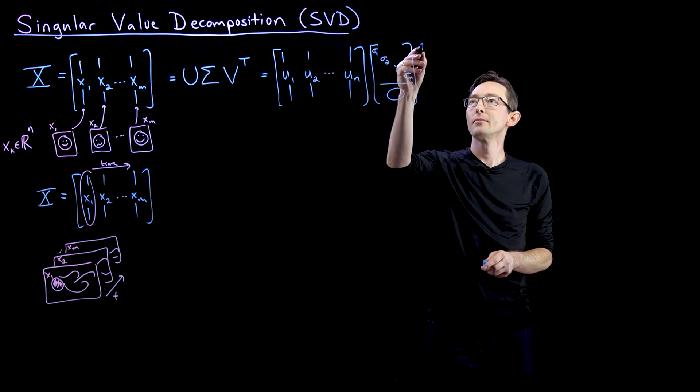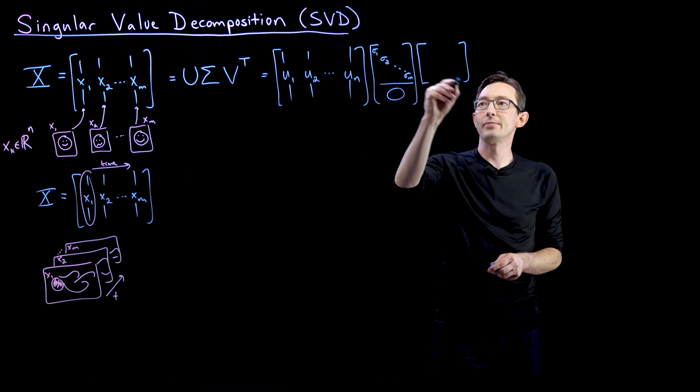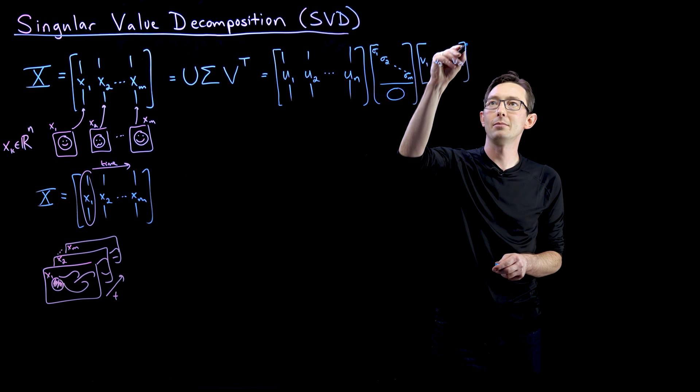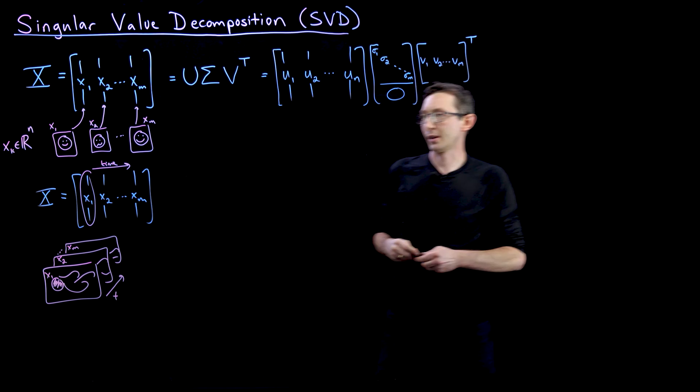I'll explain this more in a bit. And then the last matrix is this V matrix, V1, V2, dot dot dot, Vm, transposed.